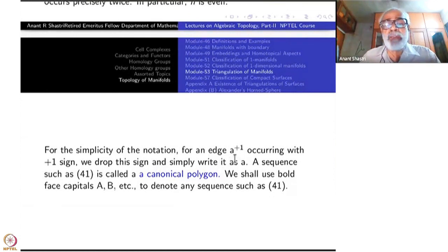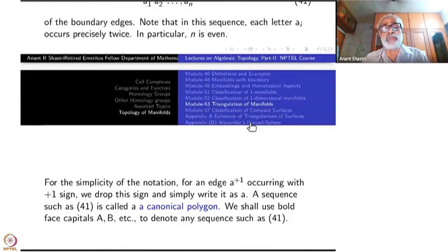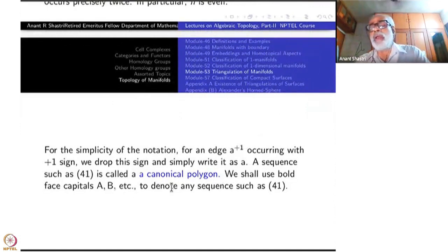For simplicity of notation, an edge A occurring with a plus sign, we drop this sign and simply write it as A. A sequence such as 41, if I keep calling this 41, sequence 41, is called canonical polygon. Just to contrast it with an arbitrary polygon. A canonical polygon means polygon with 2N sides. The interior is triangulated. The whole thing is triangulated. We shall use boldface capitals A, B, etc. to denote a part of the sequence.